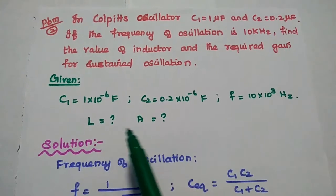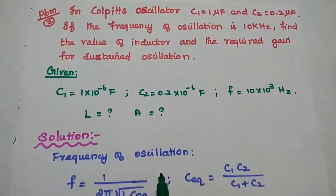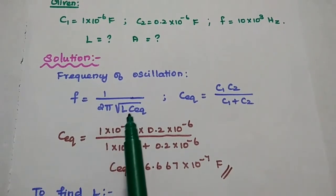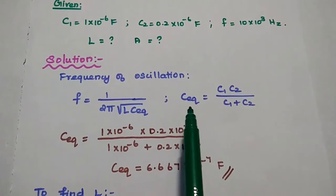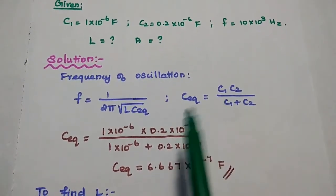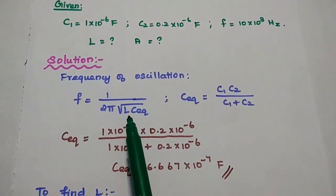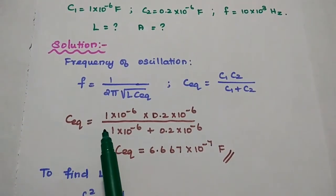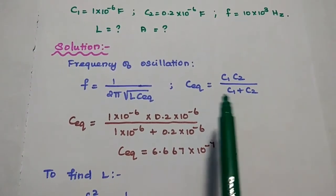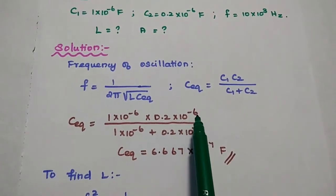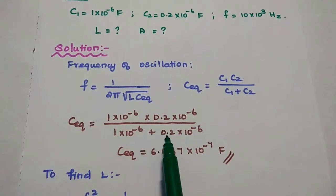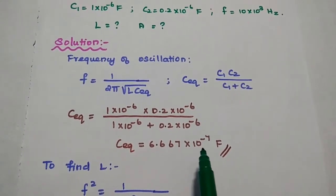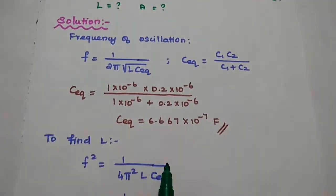We are going to find out the inductance value and the gain of the amplifier. The frequency formula is F = 1 / (2π √(L × C_equivalent)), where C_equivalent = C1·C2 / (C1 + C2). First, C_equivalent = (1 × 10⁻⁶ × 0.2 × 10⁻⁶) / (1 × 10⁻⁶ + 0.2 × 10⁻⁶) = 6.667 × 10⁻⁷ farad. This is the equivalent capacitance value.